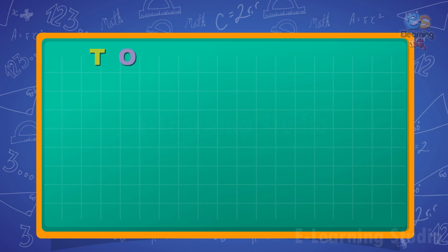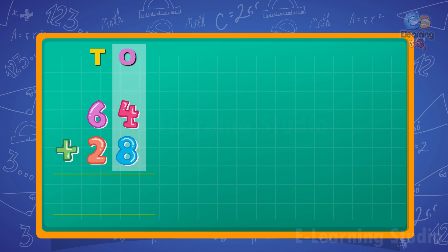Add 64 plus 28. Step 1: First add the ones. 4 plus 8 is equal to 12 ones. Write 2 under the ones column and carry 1 ten to the tens column.